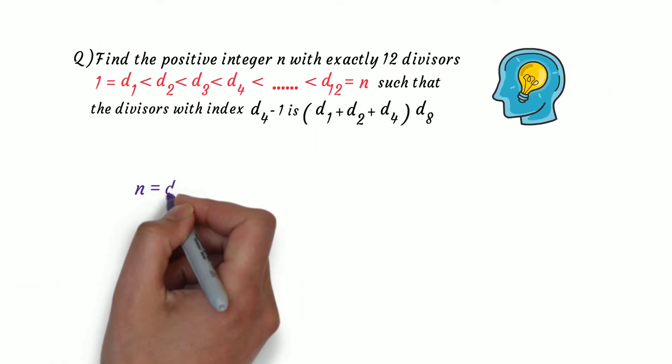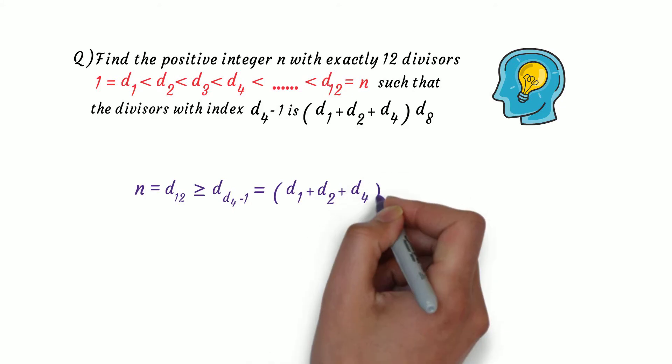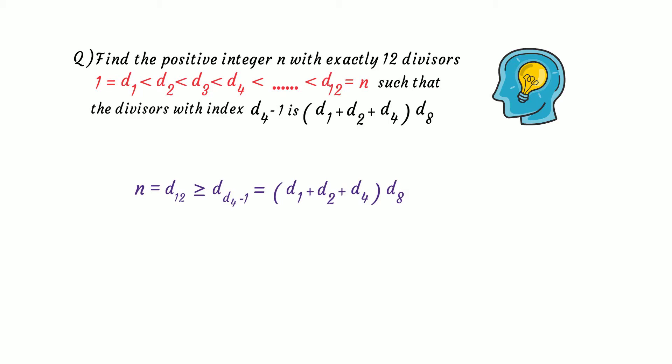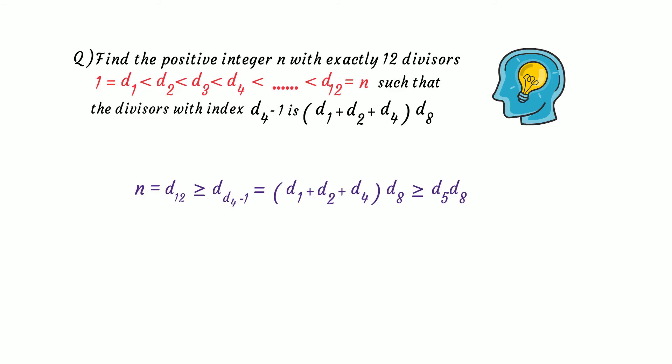We are given that n = d12, and d(d4 - 1) compared to d12 can only be less than or equal, since no divisor of a number can exceed the number itself. Now d(d4 - 1) is defined as (d1 + d2 + d4) × d8. So (d1 + d2 + d4) is a factor of d(d4 - 1) and hence also divides n. Since its index must be greater than 4, we establish the inequality: (d1 + d2 + d4) × d8 ≥ d5 × d8. Since 5 + 8 = 13, by our property d5 × d8 = d13-i format, this equals d12 = n.